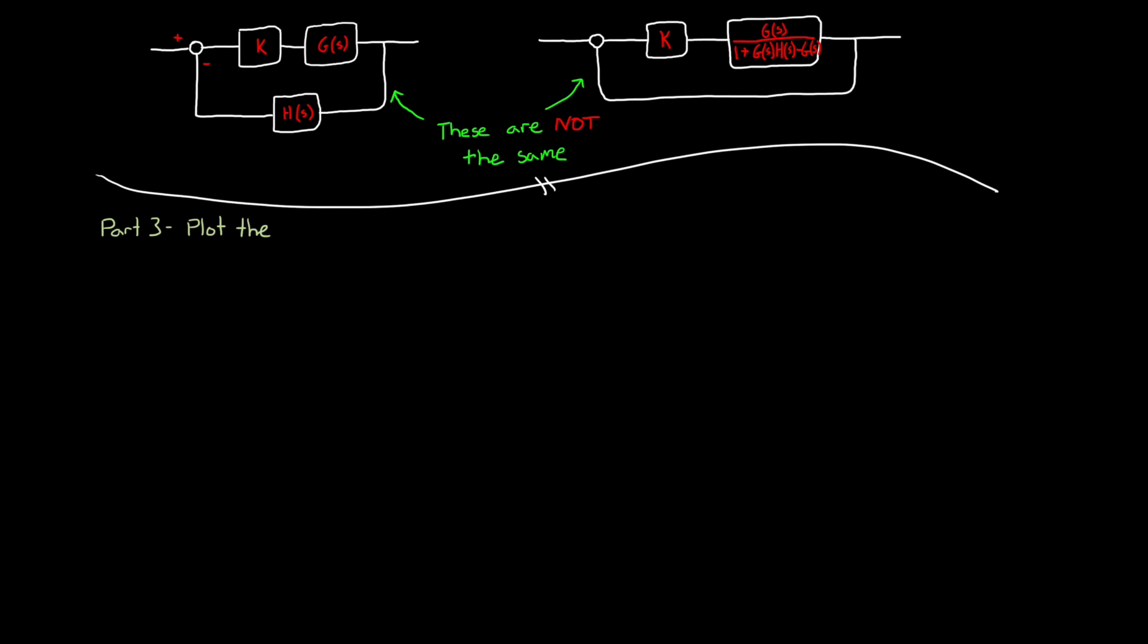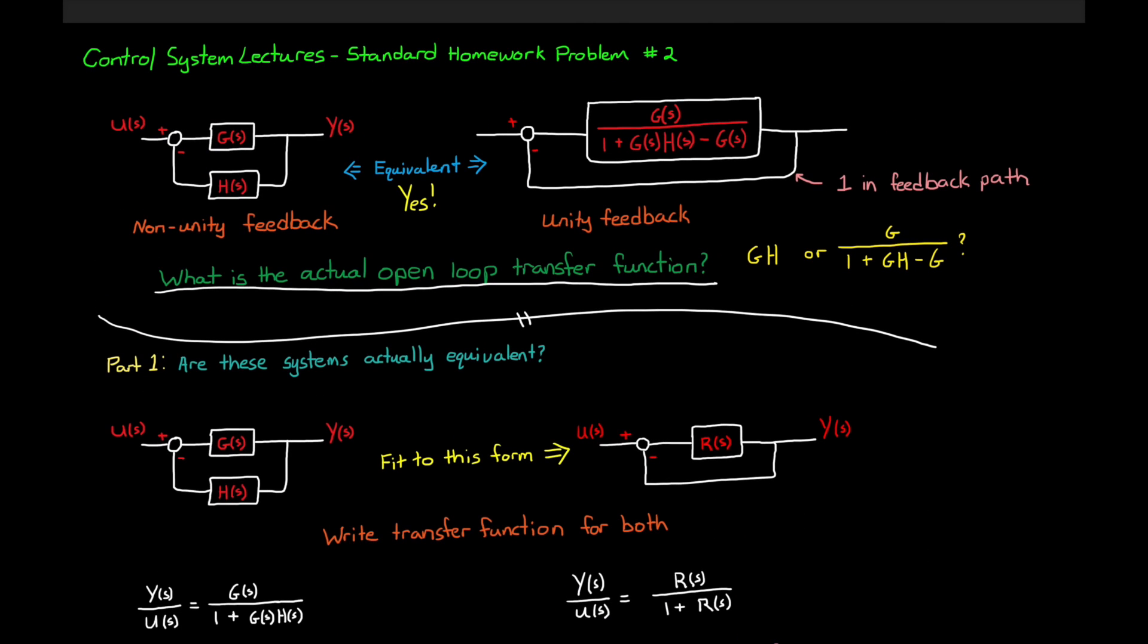First things first with the root locus method is that we need to get the closed-loop transfer function into a particular form, where that form is something in the numerator, which isn't terribly important right now, and 1 plus k times the open-loop transfer function in the denominator. This is normally necessary because the drawing rules for the root locus were developed to work on the open-loop transfer function. Arranging the closed-loop transfer function in this form is a way to find that open-loop system. But we already have the open-loop equation since our systems are so simple, therefore we don't have any extra work to do here. Our two open-loop systems are g times h, and g over 1 plus gh minus g.